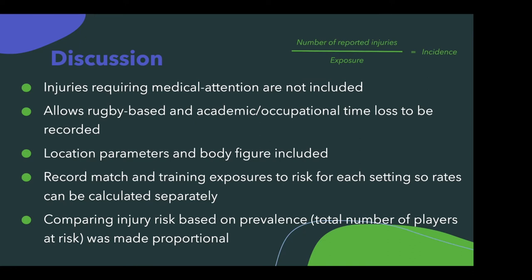They also decided that comparing injury risk based on prevalence should be made proportional. For example, if Club A has 60 players and 15 get injured, the incidence is 25%. However, if Club B has 100 players and 20 get injured, the incidence becomes 20%. This made it more proportional to compare risk between professional and community-based players, since teams might be larger or smaller.